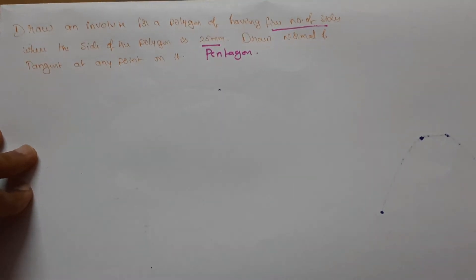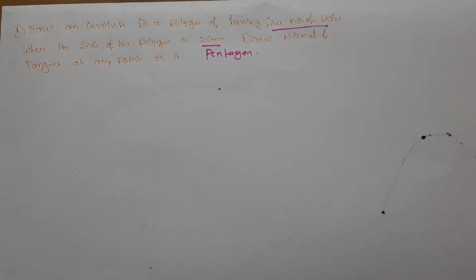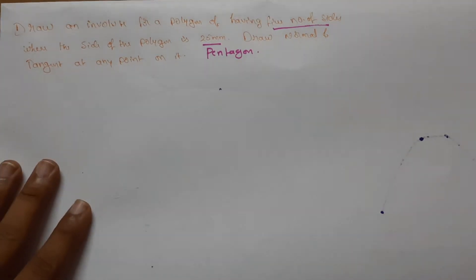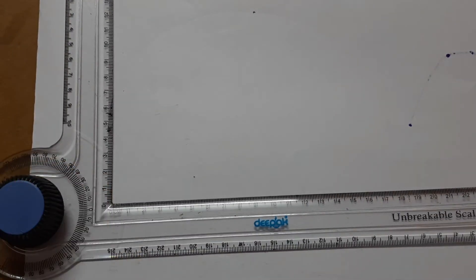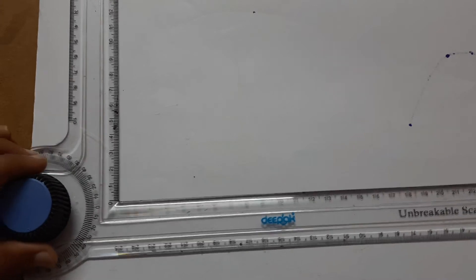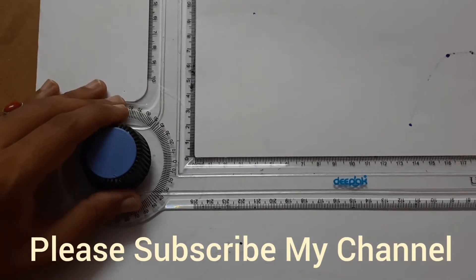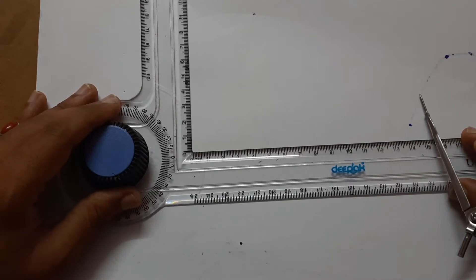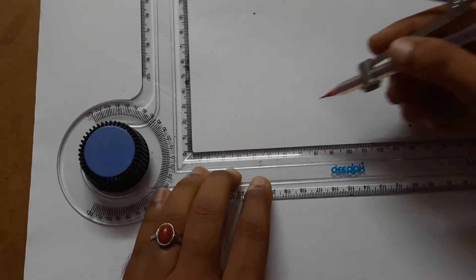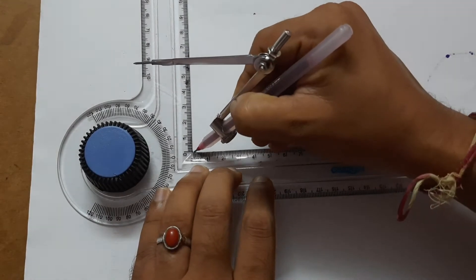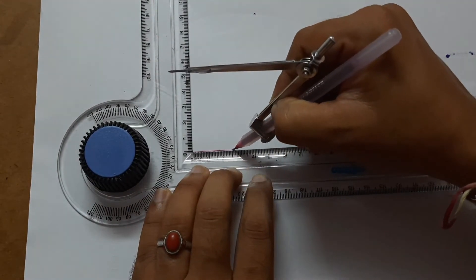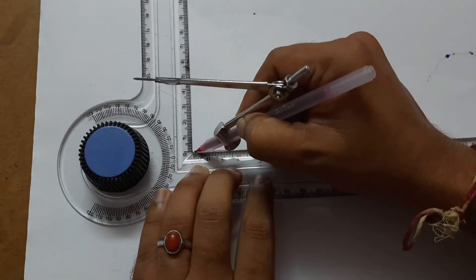And I want to draw normal and tangent at any point on it. First I want to draw a pentagon, and next I want to draw the involute. The side of the pentagon is 25 mm.